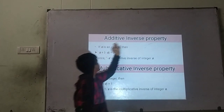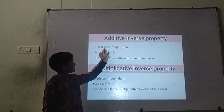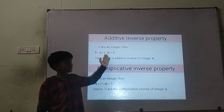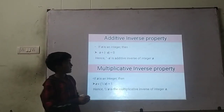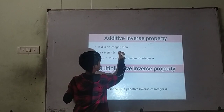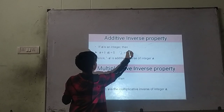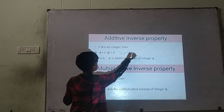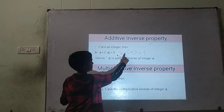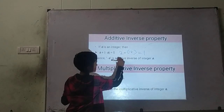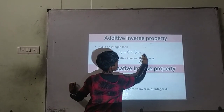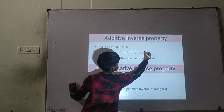Additive inverse. If A is an integer, then A plus minus A is equal to 0. For example, 2 plus bracket minus 2 is equal to 0, because 2 minus 2 is equal to 0.